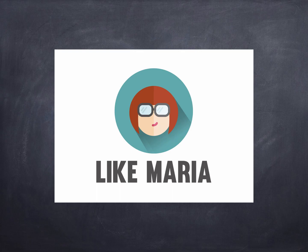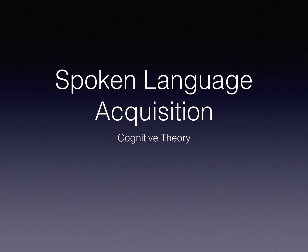Hello and welcome back to Like Maria. We've started a new series of videos for A-level English language. Today we're going to concentrate on spoken language acquisition — looking at how children learn language — and we're going to concentrate on cognitive theory. This is one of the theories that it will be useful for you to talk about in the exam.